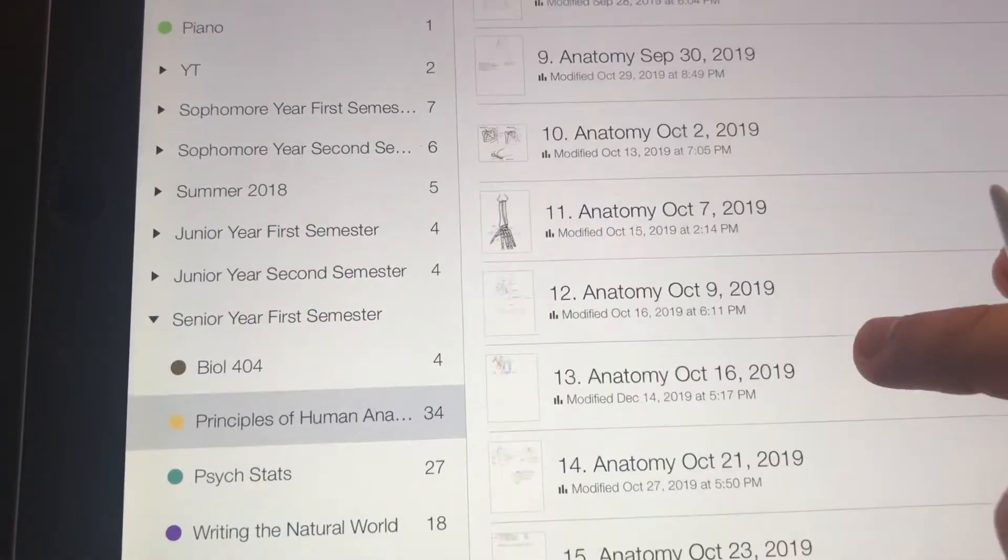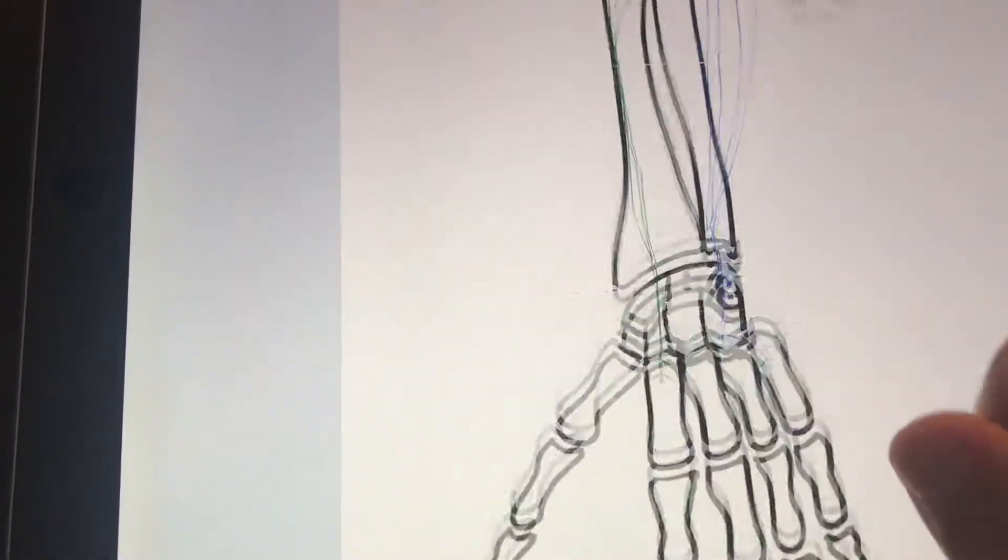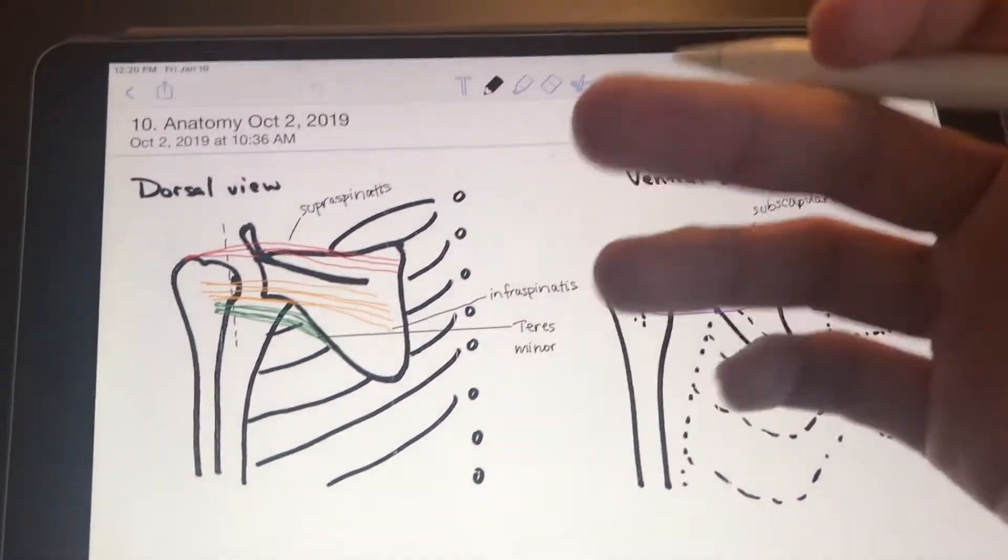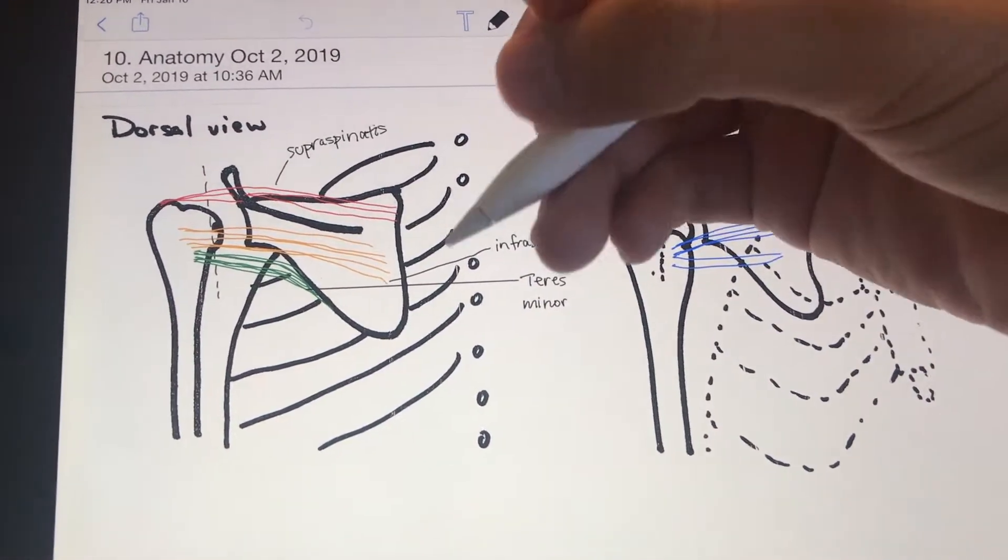So once you have it in Notability, then all it is is a matter of drawing. So what my professor would do is he would use different colors. He wasn't using a digital iPad or anything. He was using pen and paper, but he would use different colored pens.